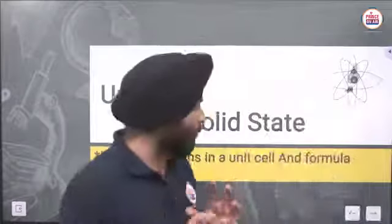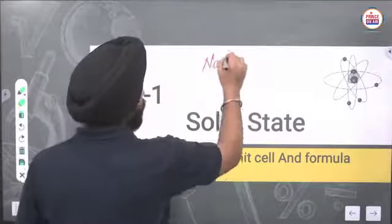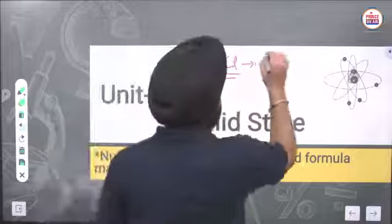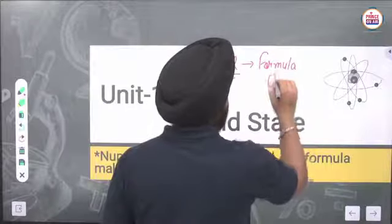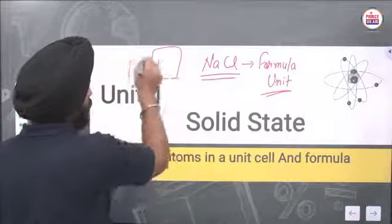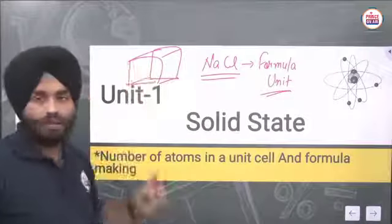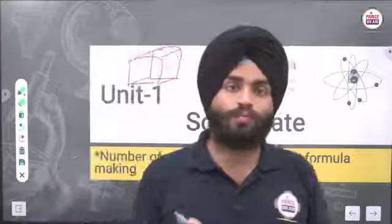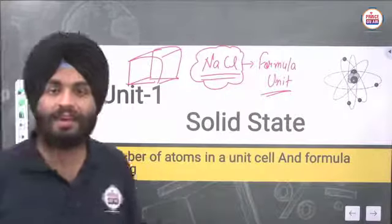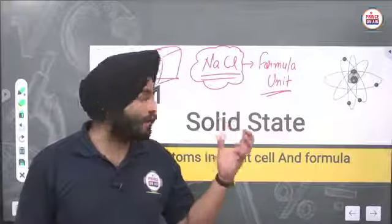All of you know the formula of NaCl, that is sodium chloride. But actually, it is not a molecular formula — it is a formula unit. We use the term 'formula unit' here, not molecular formula, because NaCl represents the ratio of sodium and chloride ions at alternative corner positions. So NaCl is representing the ratio of sodium and chloride ions.